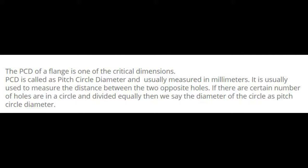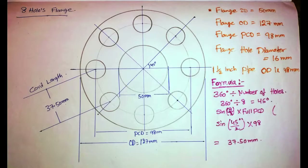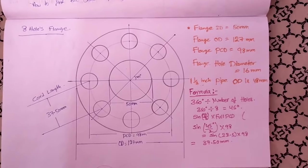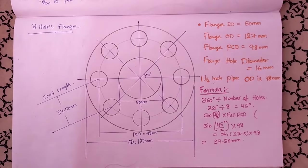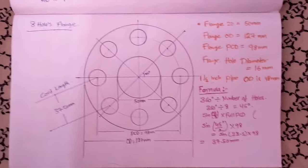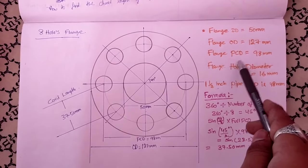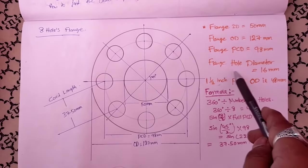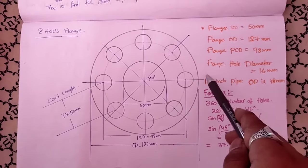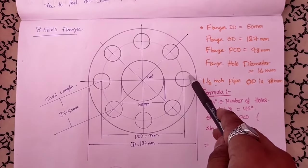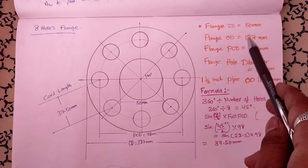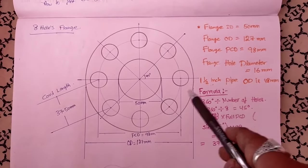In this video we are showing an example to mark an eight-hole flange and how to find the cord length of the holes. The given data is: flange ID is 50 mm, flange OD is 127 mm, flange PCD is 98 mm, and flange hole diameter is 16 mm. Now we are going to find the cord length of each hole.